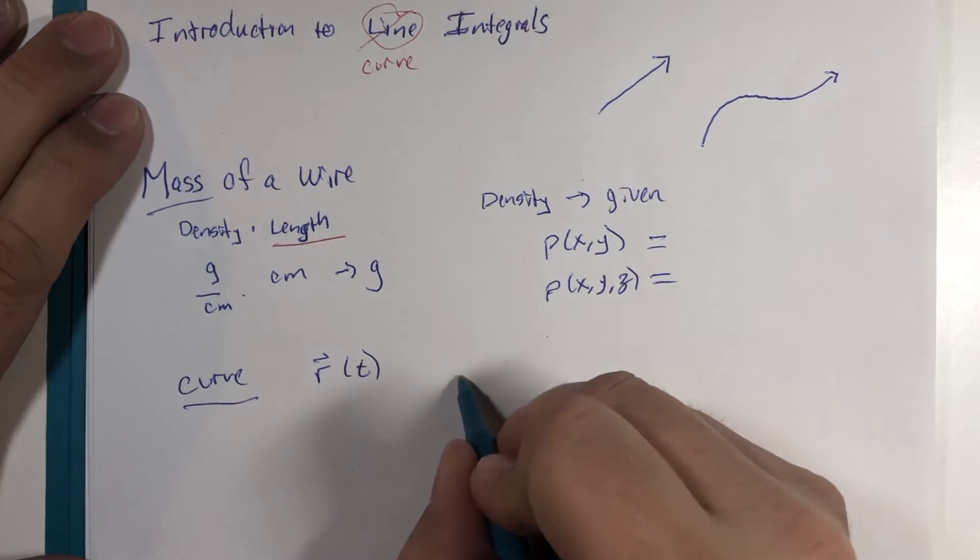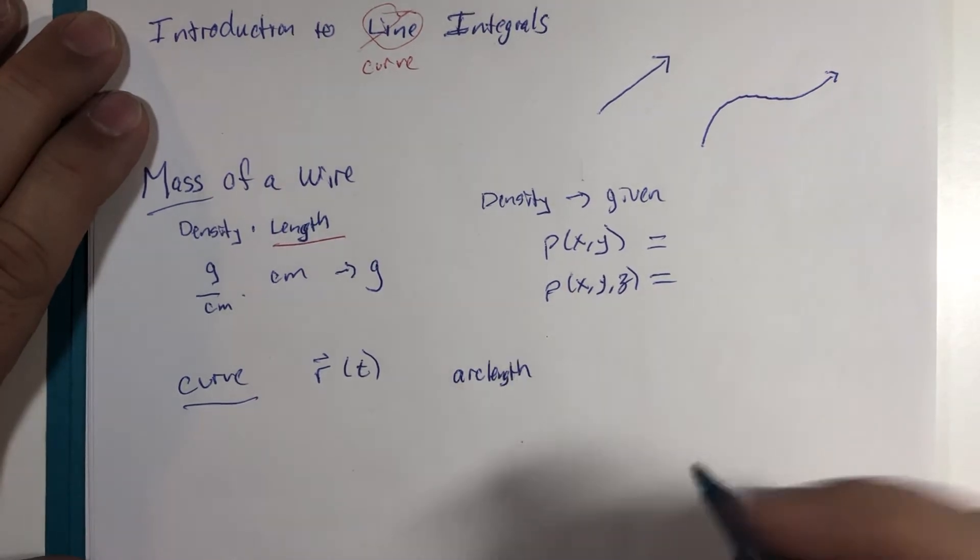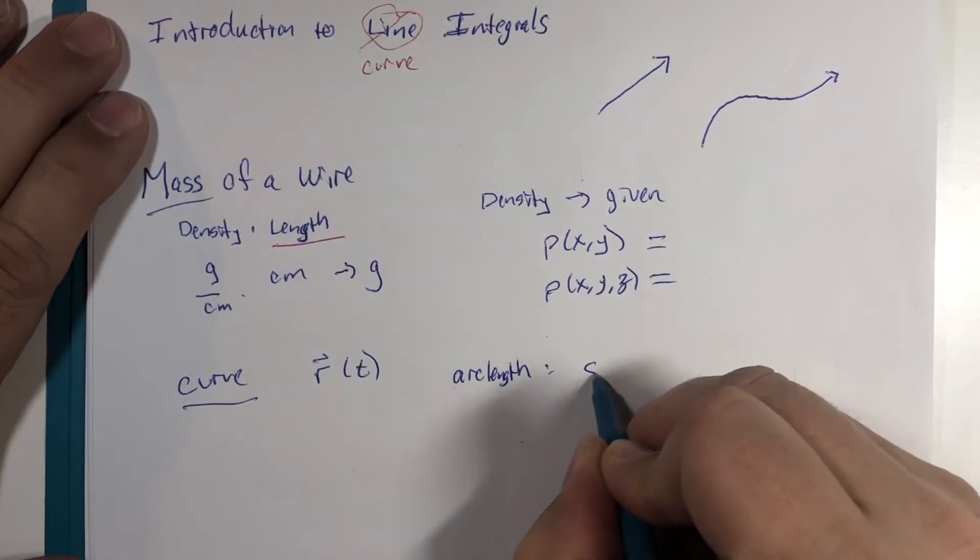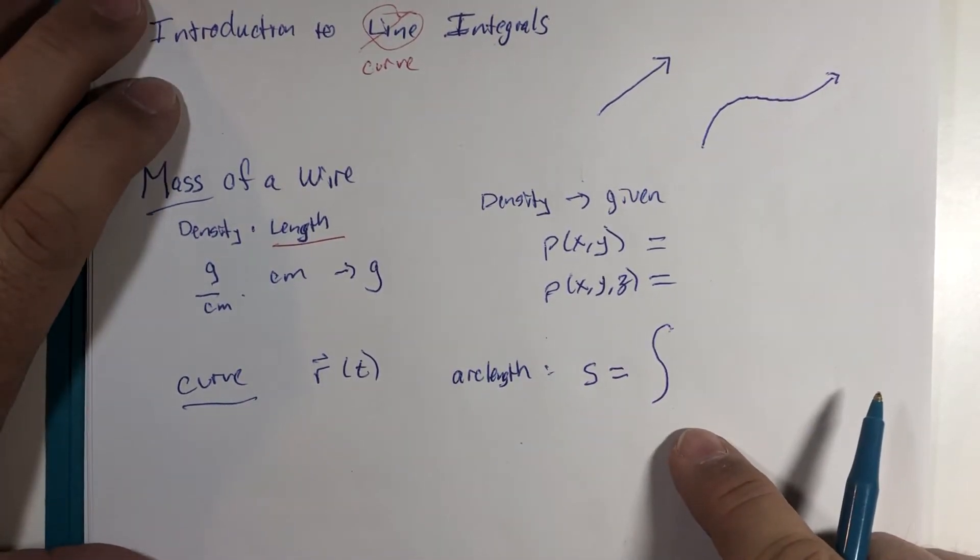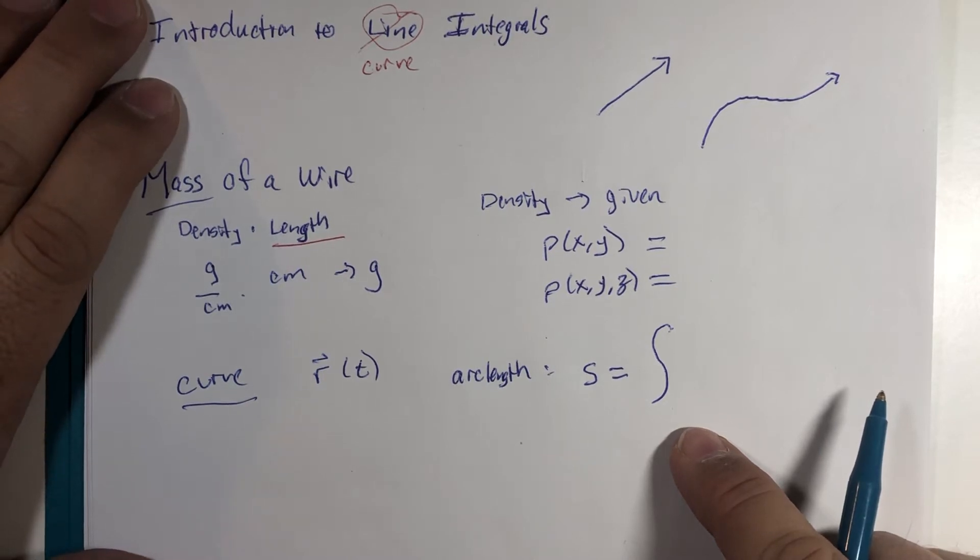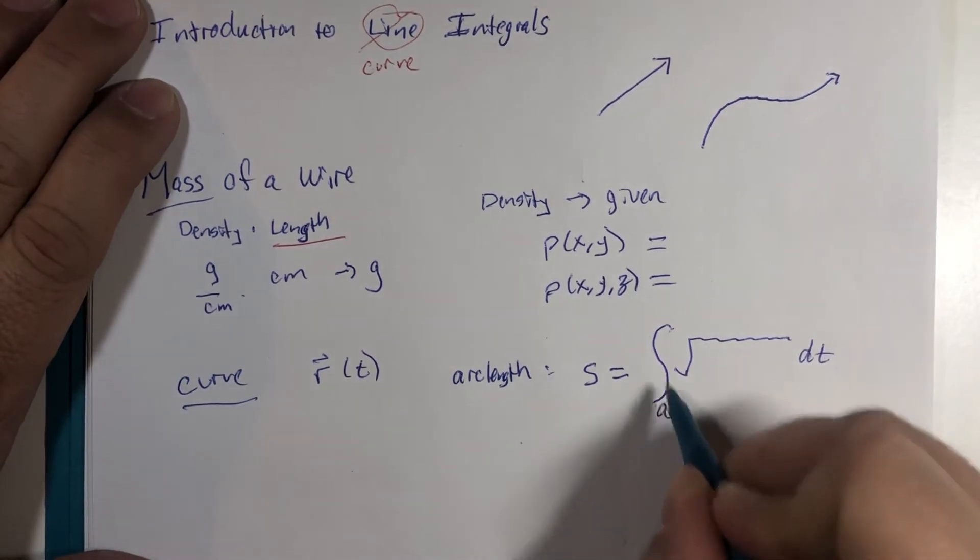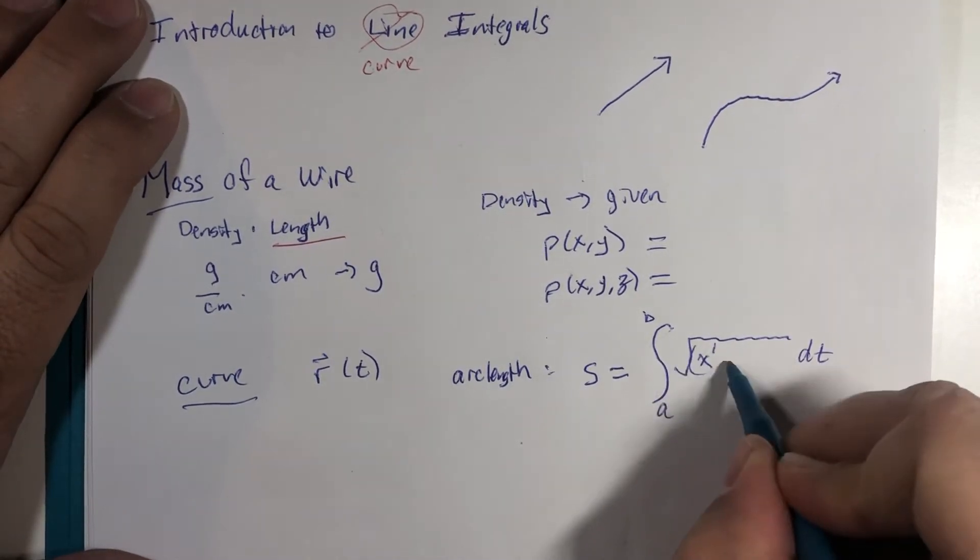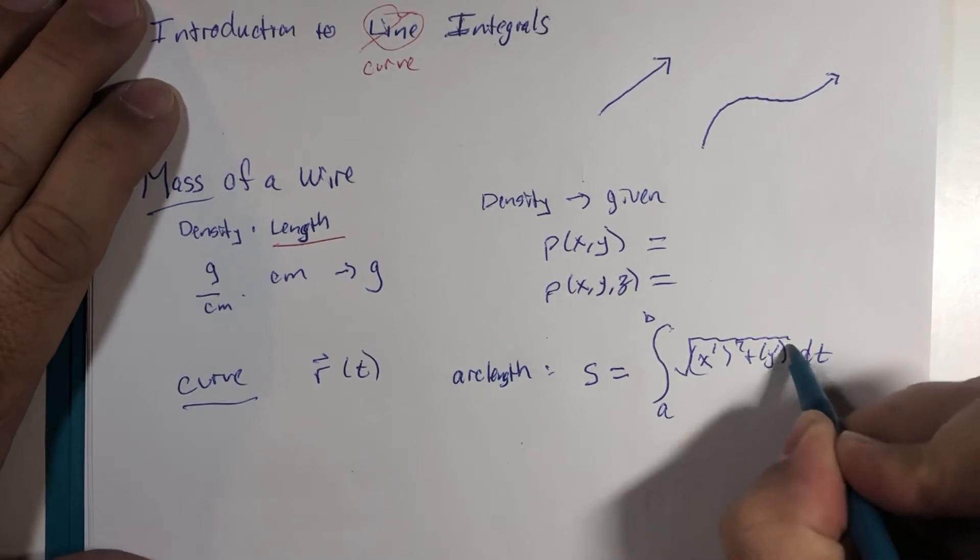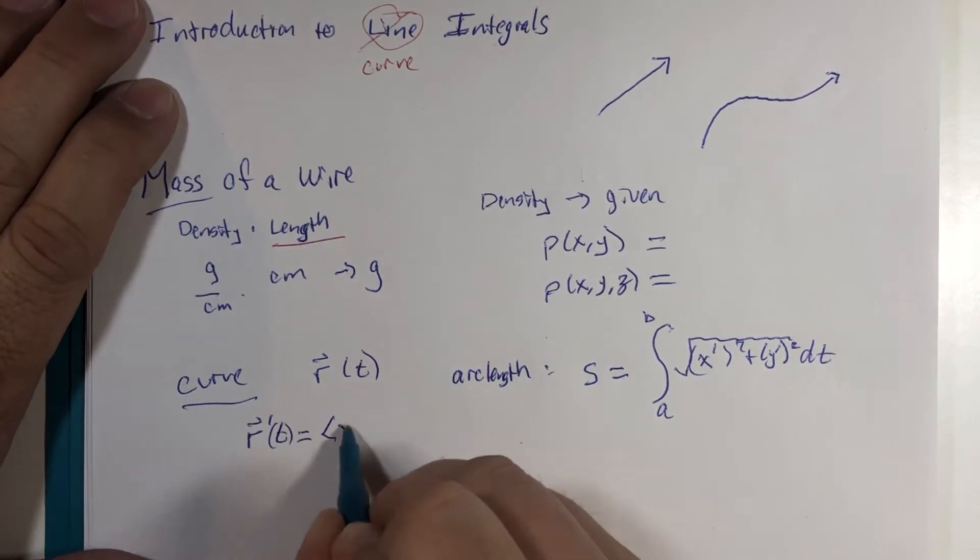Now the length of the curve using the symbol s has multiple notations. One involved the square root from a to b of x prime squared plus y prime squared, where r prime is equal to the first component and the derivative of the second component.